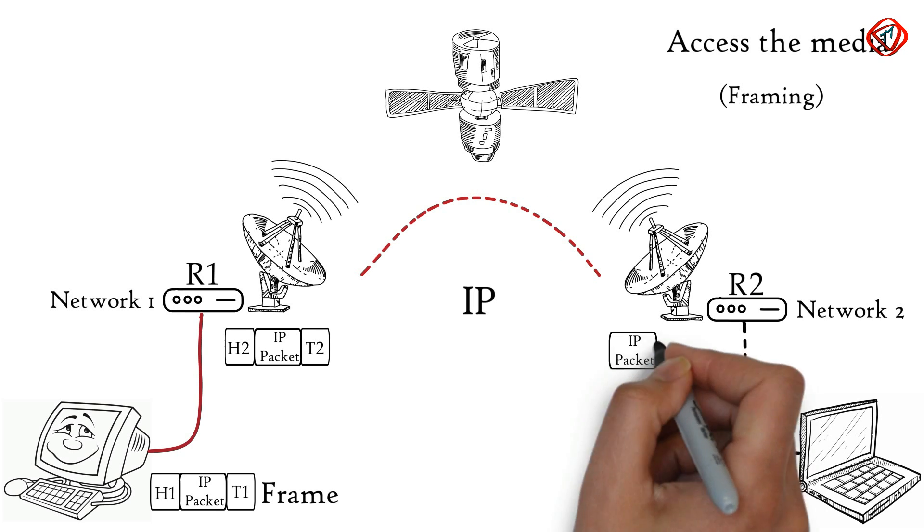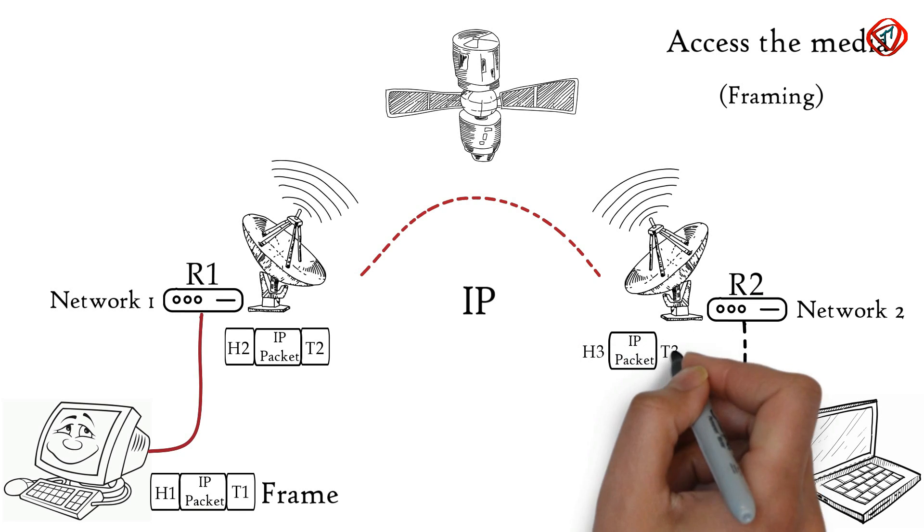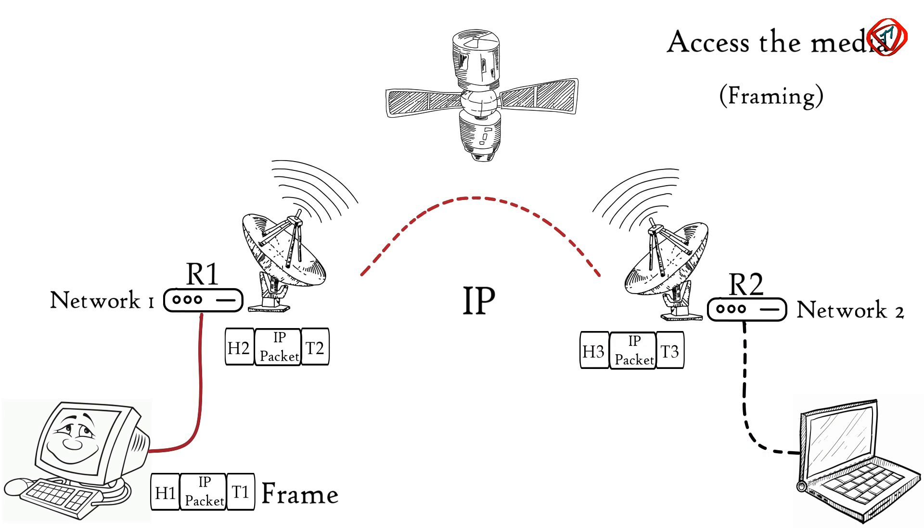Router R2 will again decapsulate the received frame and encapsulate it again to form a wireless data link frame. Laptop receives this wireless data link frame, decapsulates it, and then forwards the IP packet to the network layer.